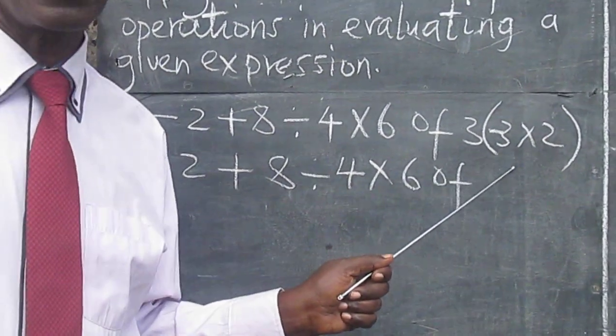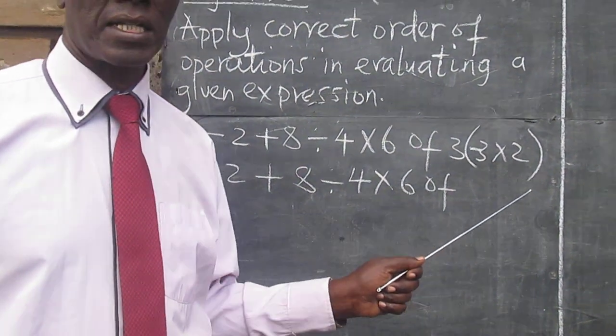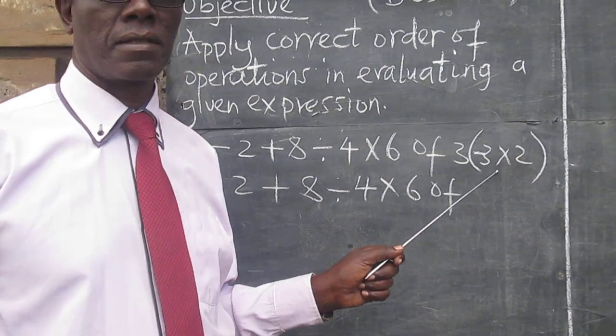Inside the bracket, we can see there is -3 × 2. So we can remove the bracket here, so that we have -18.